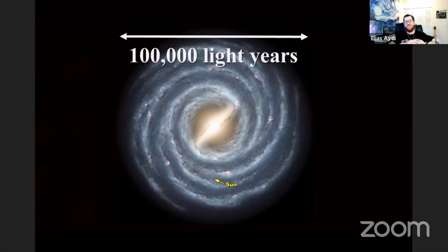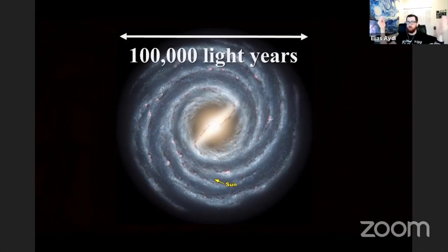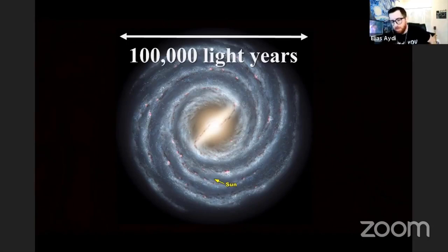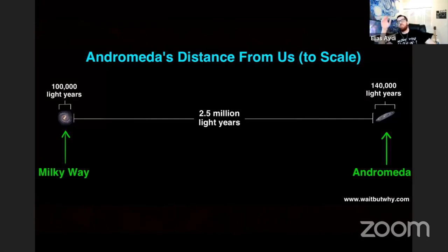Our galaxy — this is again an artistic impression, as we cannot take photos of our galaxy because we live inside of it. This is what we think our galaxy looks like. Our galaxy is 100,000 light years across in diameter, which means if you want to travel from one side to the other in a spaceship traveling at the speed of light, you need 100,000 years. Let's make a trip to the nearest galaxy to us, which is Andromeda. Andromeda is at a distance of 2.5 million light years away from us — a really large number, and this is just the nearest galaxy.